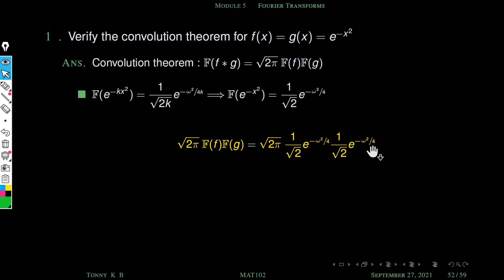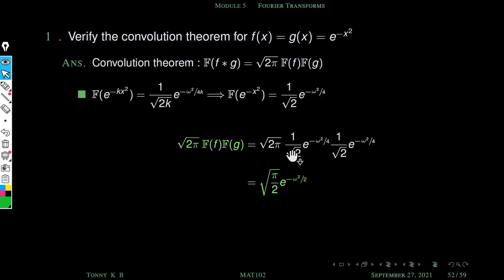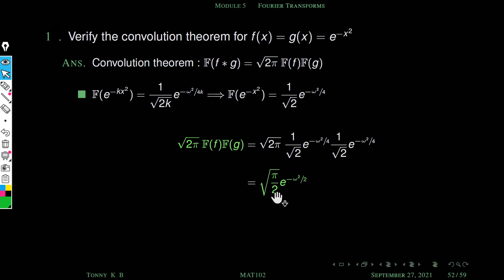Now we evaluate the right hand side. The RHS is root 2 pi times F{f} times F{g}, which equals root 2 pi times (1/root 2) e^(−ω²/4) times (1/root 2) e^(−ω²/4). Combining constants gives root pi by 2, and combining the exponentials gives e raised to minus omega square by 2. So the right hand side equals root(pi/2) times e raised to minus omega square by 2.